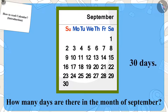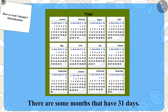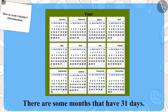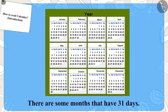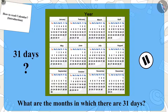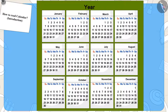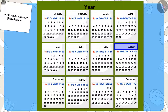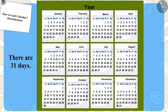Children, do you know that there are not 30 days in all months? There are some months that have 31 days. Can you tell by looking at the calendar which months have 31 days? If you want, you can pause the video to find the answer. January, March, May, July, August, October, and December have 31 days.